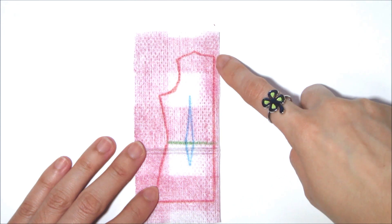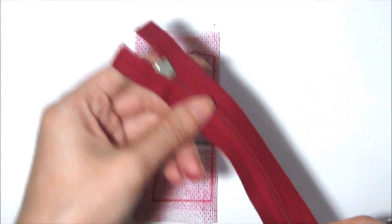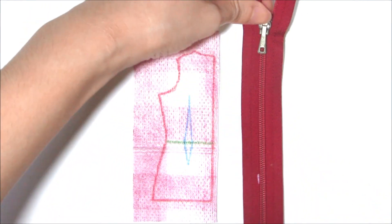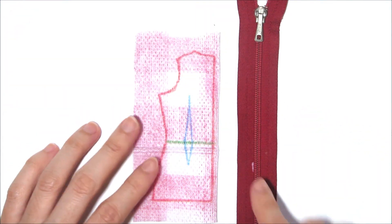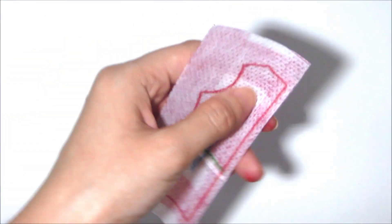So there is a gap of allowance here. This allowance is to allow you to sew the zip on. Make sure you leave at least one inch or half an inch of gap for you to sew the zip on.